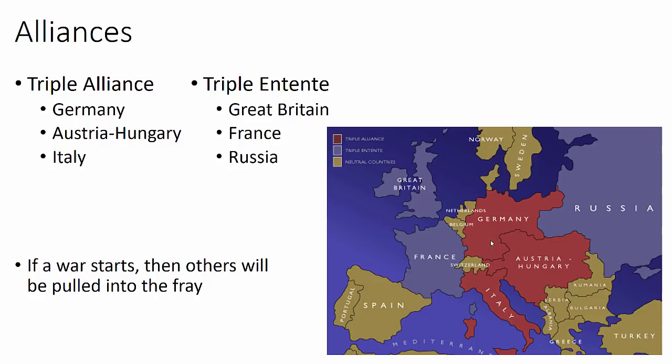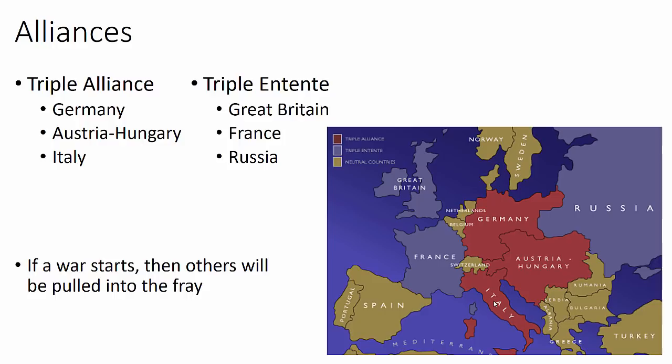The important thing about alliances is that if a war starts, other countries will be pulled into the fray. A conflict between Serbia and Austria-Hungary, which could be just a small regional war, ends up pulling in Germany, Russia, France, and Great Britain, and then ultimately Italy — although confusingly, they join on the other side, but we'll get to that later.